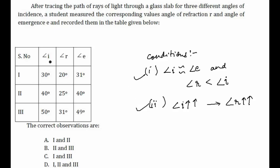Checking condition one: in the first observation, angle of incidence is 30° and emergence is 31° — approximately equal — and angle of refraction is 20°, which is less than the angle of incidence. The second and third observations also satisfy this: angle of incidence equals angle of emergence, and angle of refraction is less than angle of incidence. So all three observations satisfy the first condition.